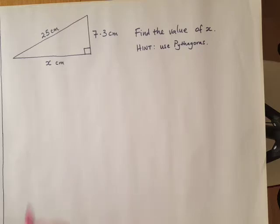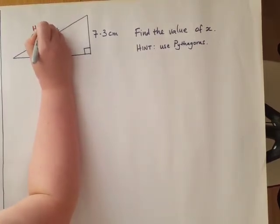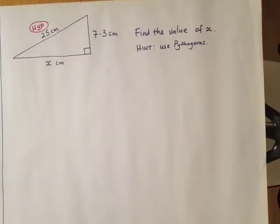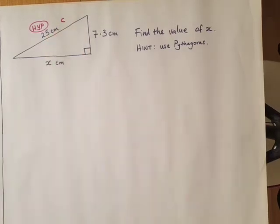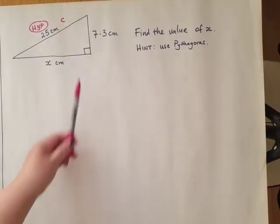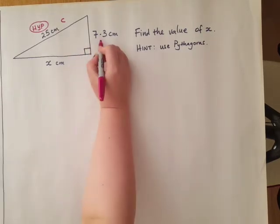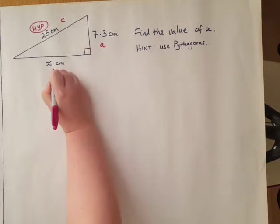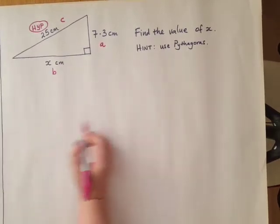So let's label it hypotenuse. And now we're going to label the sides a, b, and c. The hypotenuse side has to be c, and the other two sides are a and b. Doesn't really matter which one we pick. Let's make that one a, let's make that one b. Okay, let's write down the Pythagoras formula.